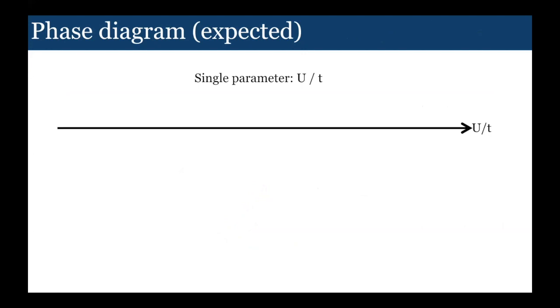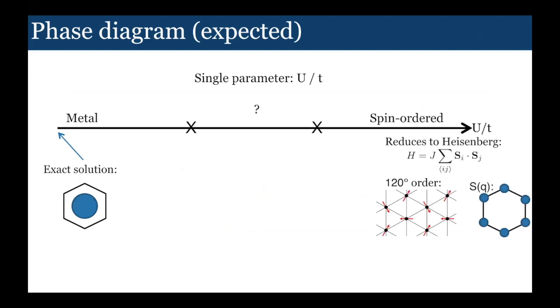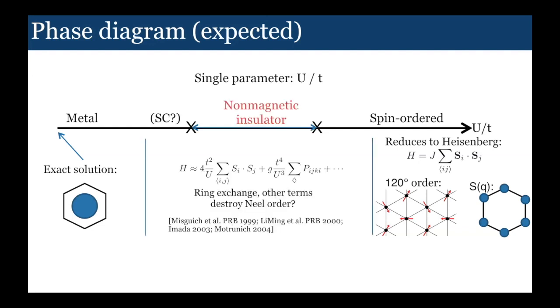From a theoretical perspective, what would we expect about the nature of the potential spin liquid? We have a phase diagram with just one parameter, U over T. Of course, with small U we start out in a metal. For very large U, the magnetic interactions are dominated by the Heisenberg term. It's actually known now that if you just take the Heisenberg model on the triangular lattice, it's not quite frustrated enough and you get a 120 degree Néel order. But as you go to intermediate U over T regime, these ring exchange terms and others become important.